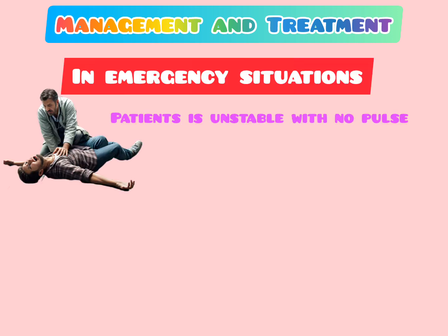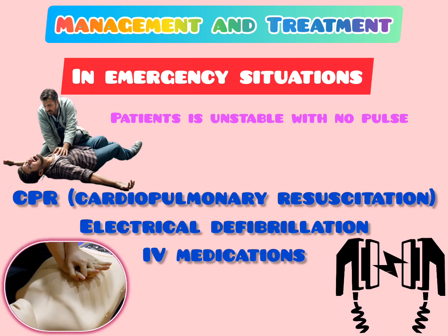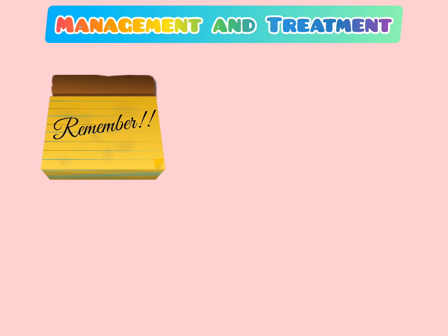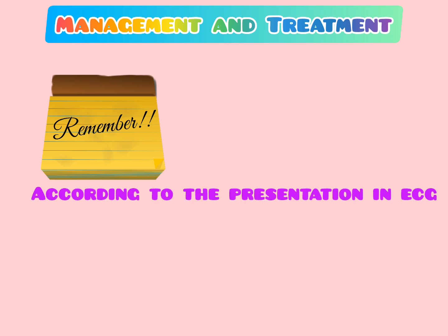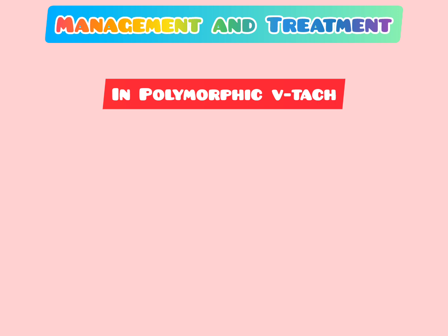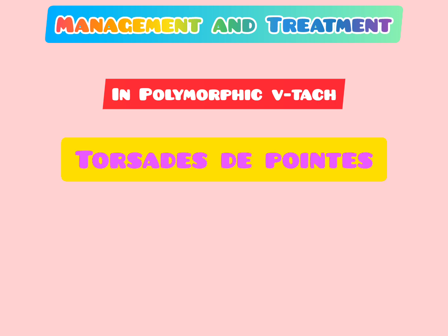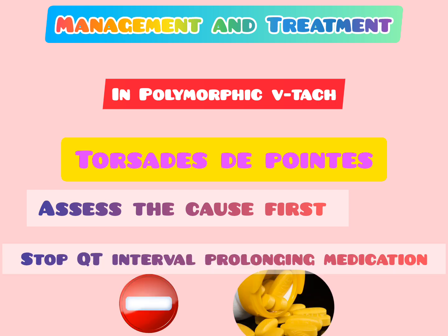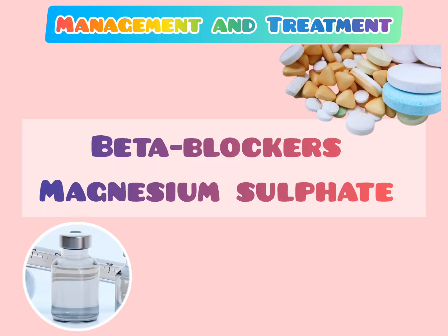In an emergency situation, if the patient is unstable with no pulse, treatment includes CPR, electrical defibrillation, and IV medications such as amiodarone, IV procainamide, and lidocaine. It is essential to manage VT according to its presentation on ECG. In polymorphic V-TAC such as torsade de pointes, assess the cause first and treat accordingly — for example, stop any QT-interval-prolonging medications. Beta-blockers and magnesium sulfate are also considered in the management of VT.